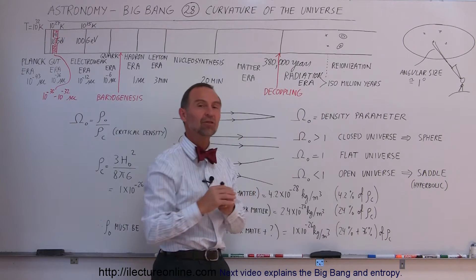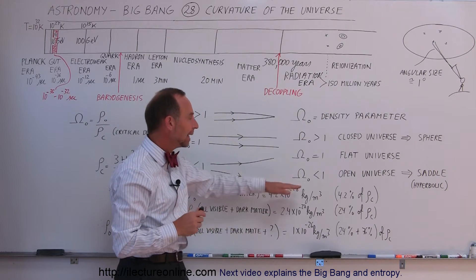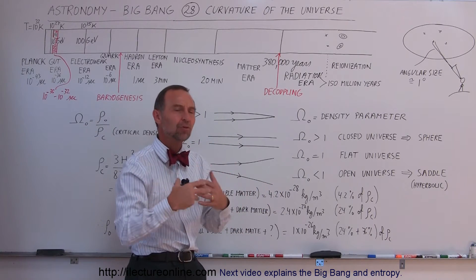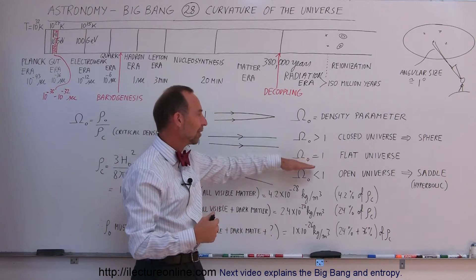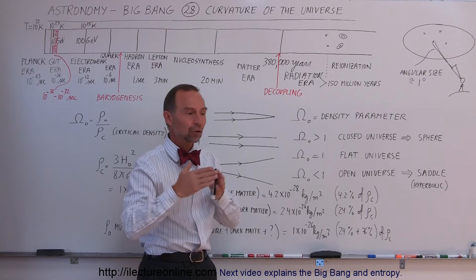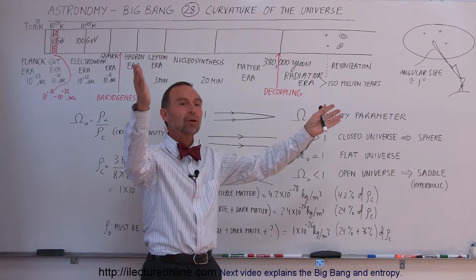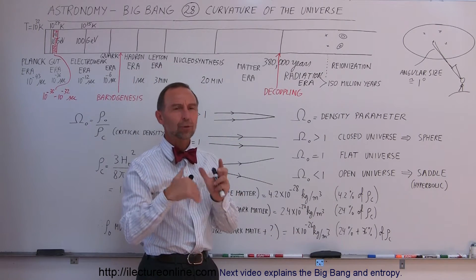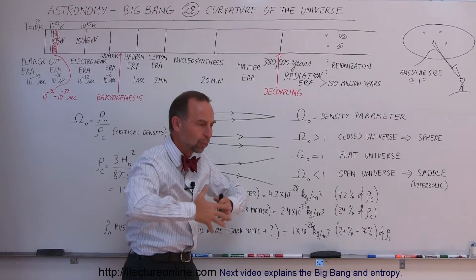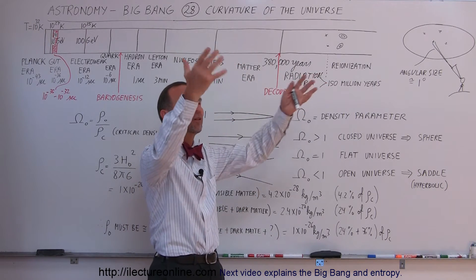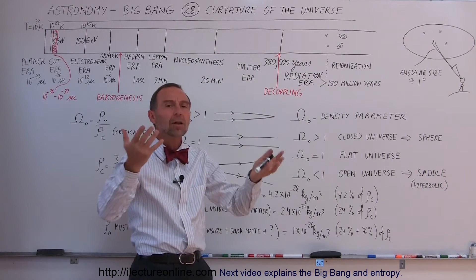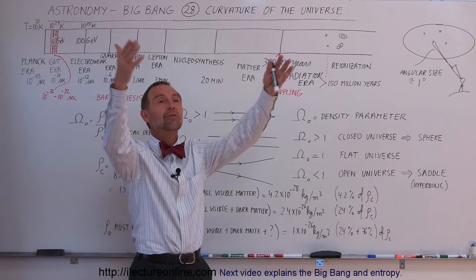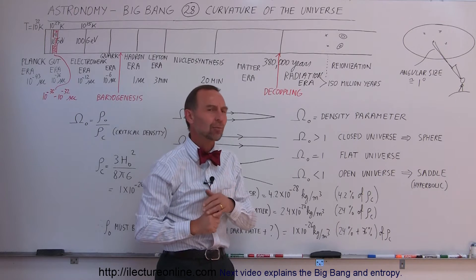An open universe would be where the density parameter is less than one, so there's not as much matter as you would need for a flat or closed universe. The universe would kind of curve outward. This is a four-dimensional curve, so the universe would curve away from itself and become like a hyperbolic curve where you'd never get back to where you started, always moving further and further apart from the straight direction you set out to be.